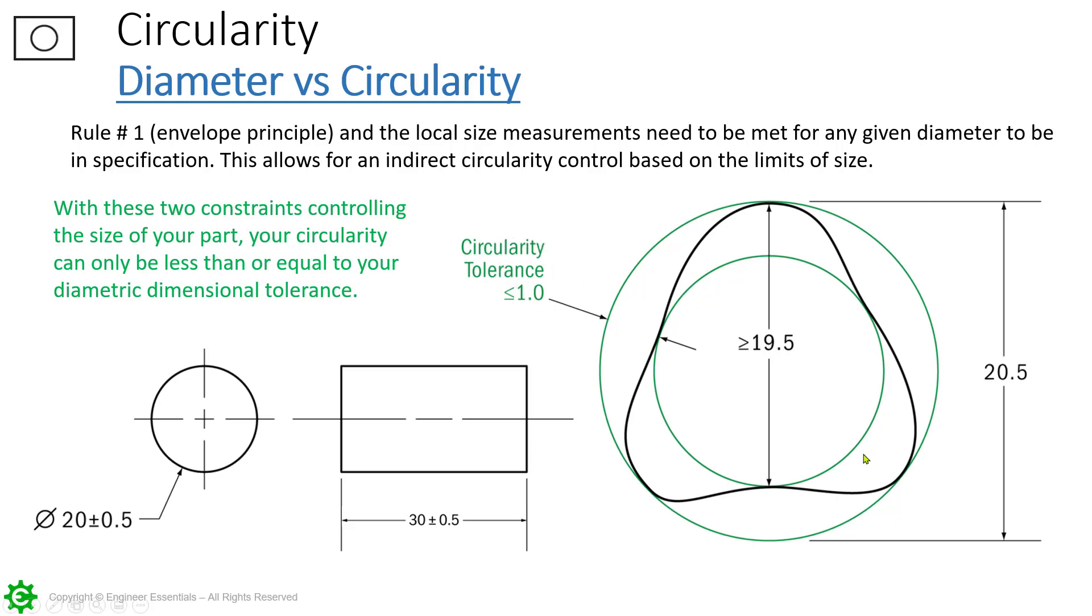Notice that 19.5 is tangent here to the inner circle but then going on tangent to the maximum material condition. Now what this is showing is that surface on any given element is allowed to move within this tolerance zone and again that tolerance zone there is not LMC. That's a different one.